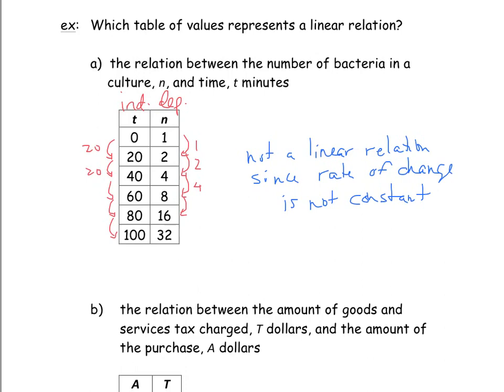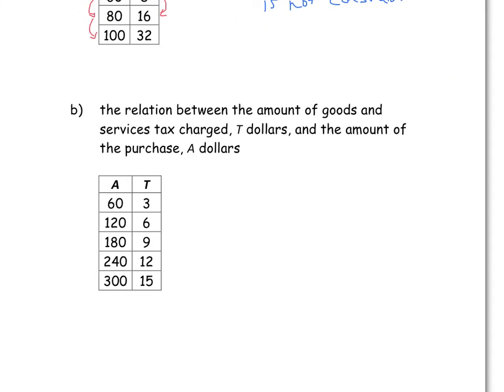Let's look at the next one. The relation between the amount of goods and services tax charged and the amount of purchases. We're asking you, is the amount of taxes you pay linear compared to what you purchased? The amount you purchased - this is something you can control. So this is your independent variable. And your T, your taxes, dependent variable.